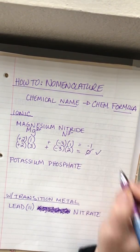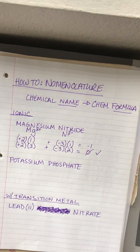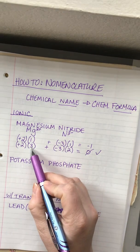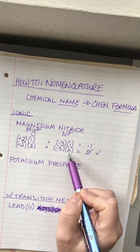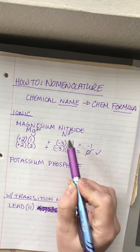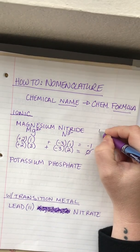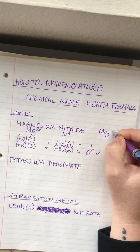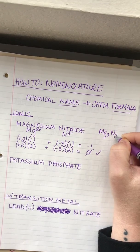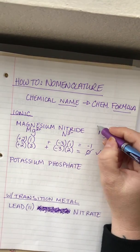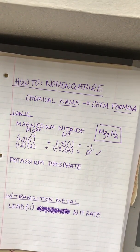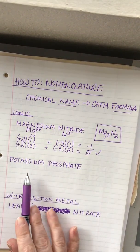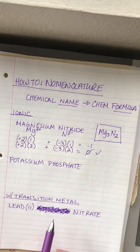That gives me negative 6 and positive 6, which equals zero — making a neutral ionic compound. The 3 becomes the subscript for magnesium and the 2 becomes the subscript for nitrogen, giving me Mg₃N₂ as the chemical formula for magnesium nitride.